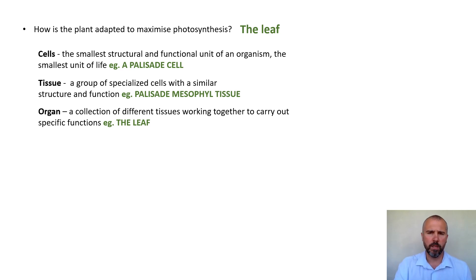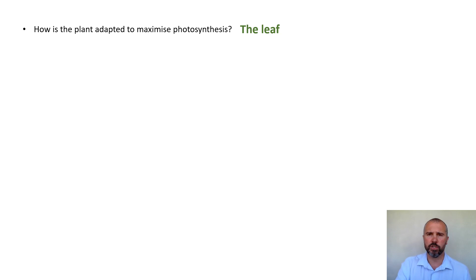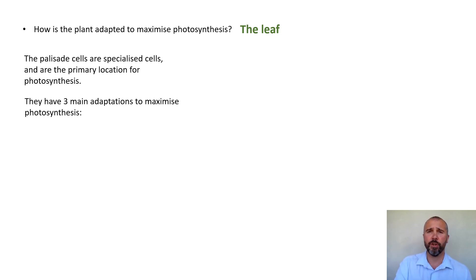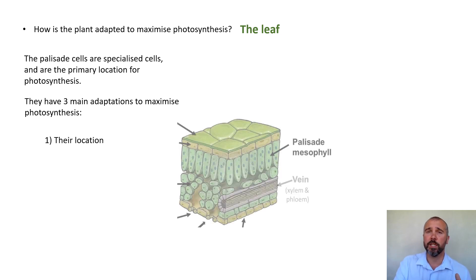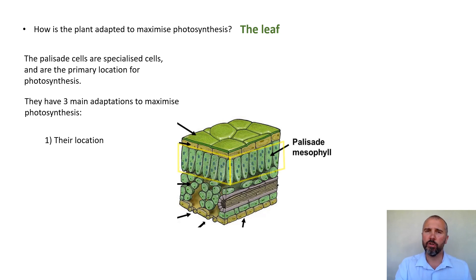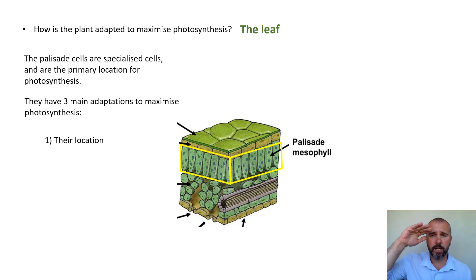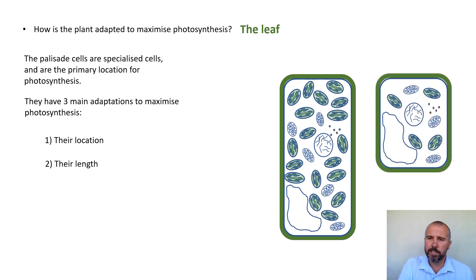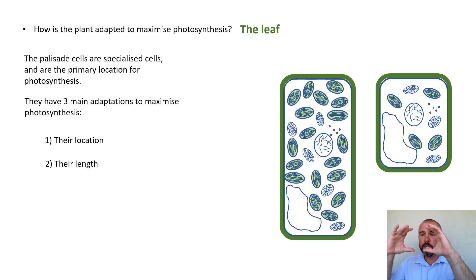Palisade cells are specialized cells and the primary location for photosynthesis. They have three main adaptations to maximize photosynthesis. First, their location: palisade mesophyll sits near the top of the leaf, so sunlight coming down passes through the cuticle and upper epidermis and hits the palisade layer almost immediately. Second, their length: palisade cells are much, much longer than a normal plant cell.